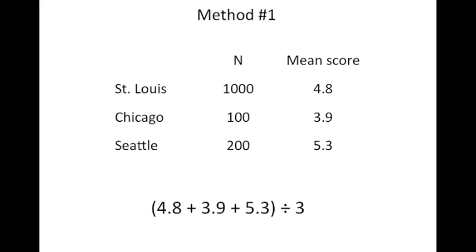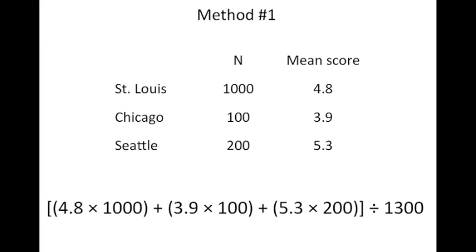We therefore want to give higher weighting to larger studies and lesser weighting to smaller studies. Here, we assign to each study a weight, which is the number of subjects included in this study. 1000 for the St. Louis study, 100 for the Chicago study, and 200 for the Seattle study. While actually more complicated, this is the basic concept behind a fixed effect model. In a fixed effect model, the actual weight assigned to each study depends on the variance of the study rather than directly on the sample size. Having said that, size is typically the largest contributor to variance, especially when the studies each use similar methodology.